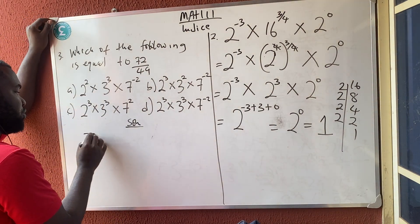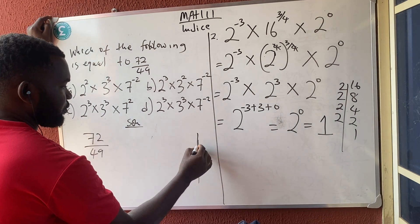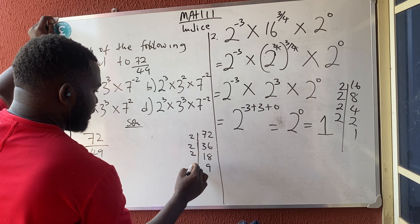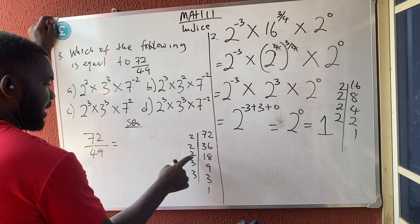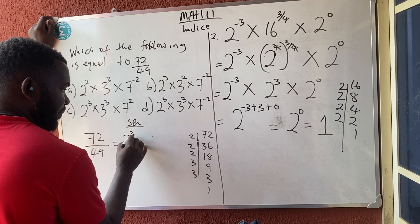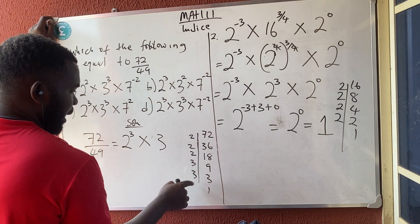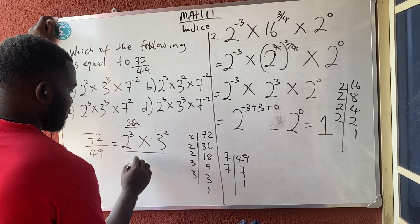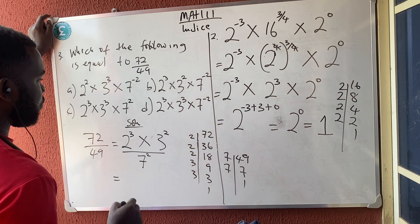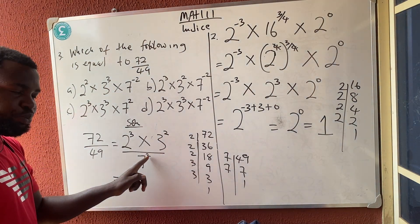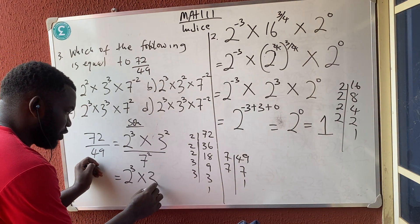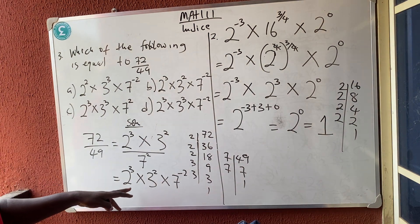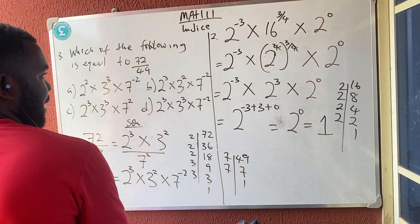Let's solve — reduce 72: 72 divided by 2 is 36, divided by 2 is 18, divided by 2 is 9, divided by 3 is 3, divided by 3 is 1. So I'm dividing with 2 three times and with 3 two times, giving 2 raised to power 3 times 3 raised to power 2. Now reduce 49: 49 divided by 7 is 7, divided by 7 is 1 — so 7 raised to power 2. But since I want to bring this up, the power becomes minus. So my answer is 2 raised to power 3 times 3 raised to power 2 times 7 raised to power minus 2. The answer is option B.